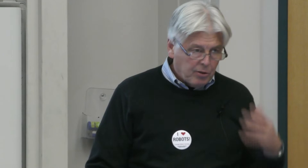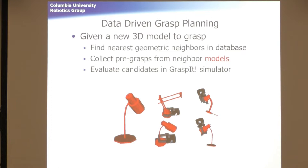We find the nearest geometric neighbor in the database — you can use whatever nearest neighbor method for shape matching you want. We use Zernike moments, but you could use others. We collect the pre-grasp from the neighbor models and evaluate the candidates in our simulator to see how good the grasp is, and it worked pretty well. For example, these three novel objects we haven't seen — we look in our database, find sample grasps from a matching shape, and apply them. It works pretty nicely.